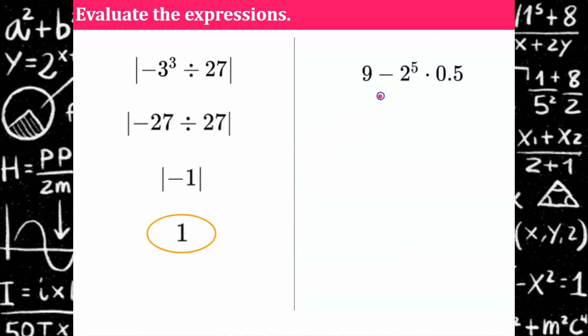Over here, the first thing I'm going to do, there's no parentheses, so I'm going on to exponents. So I'm going to simplify 2 to the fifth, which is 32. Next step is multiply and divide in order from left to right. So I'm going to do 32 multiplied by 0.5, which is 16. Now I can subtract. Remember, add the opposite. So 9 add negative 16 is negative 7.